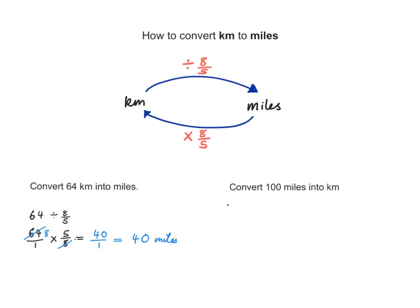So 100 times 8 fifths, which is equal to... 100 divided by 5 is 20. 20 times 8. Well, 2 times 8 is 16. Add the 0. That's 160. That's 160 kilometers. So 100 miles is 160 kilometers.